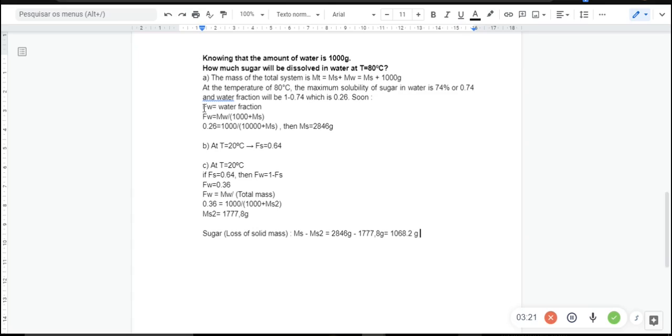This is the fraction of water. And the fraction of water is equal to the mass of water divided by 1000 grams, that is the mass of the water, plus the mass of the sugar, which is the total mass. In this problem, we can achieve the mass of sugar.